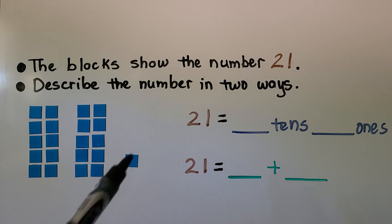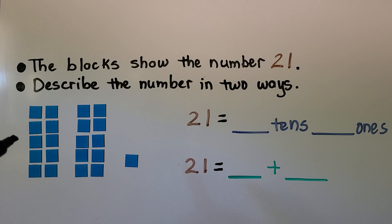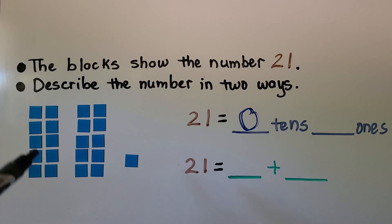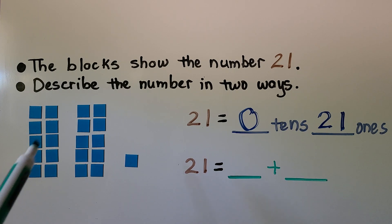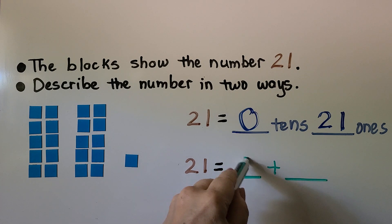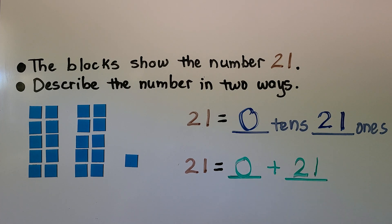The blocks show the number 21. We need to describe the number in two ways. Do you see any strips of 10? No, I don't see any. We have zero tens. And we have 10 here, 10 here, that's 20, and one more — that's 21 little squares for 21 ones. Each of these little units is equal to 1. We have 21 ones. That's equal to zero tens and 21 ones. 21 is equal to zero plus 21.